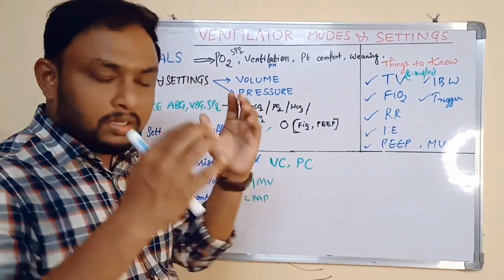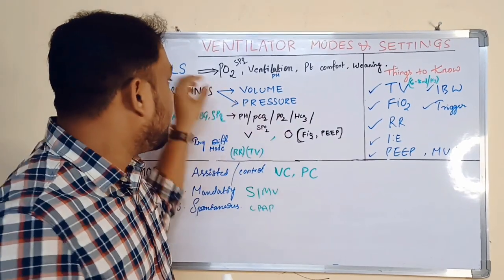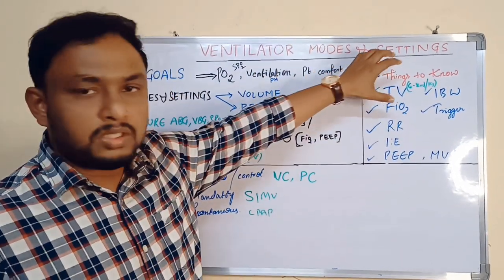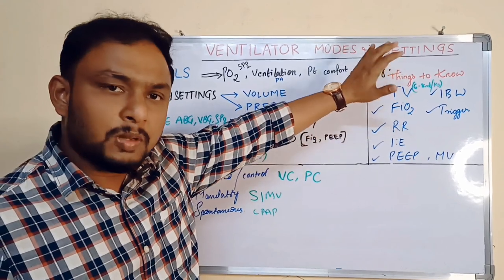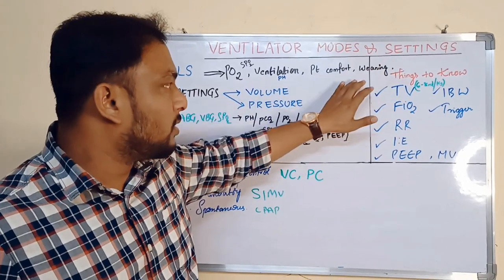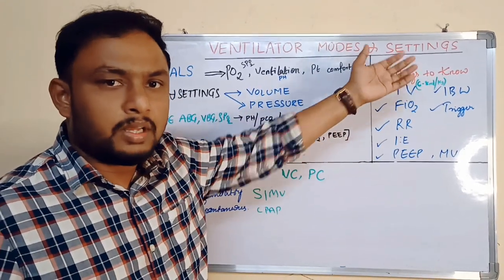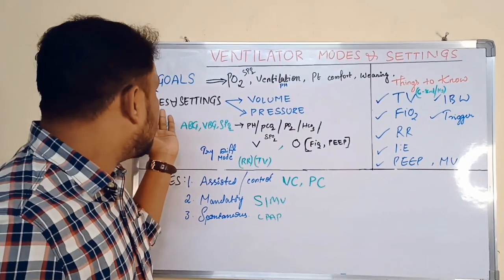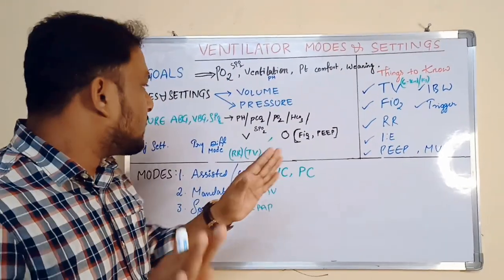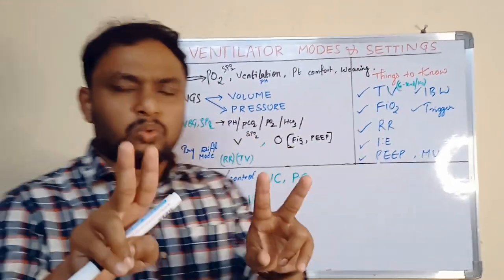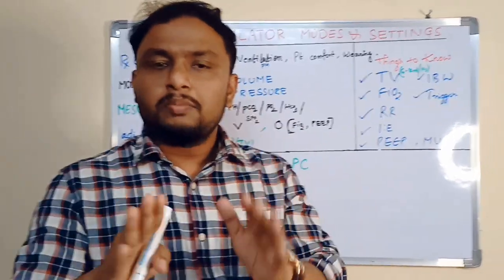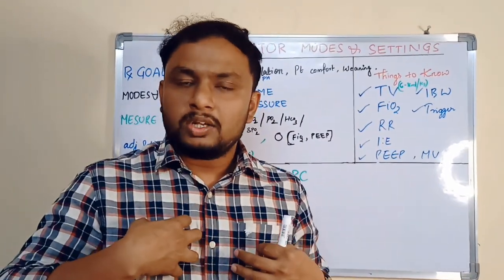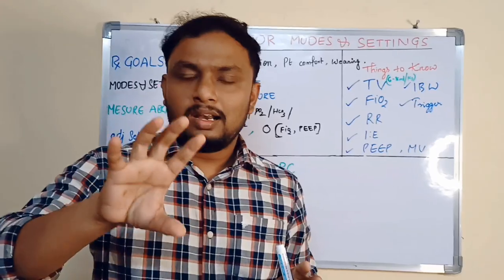You need to keep in mind these are the treatment goals. You need to achieve these goals. At the end, if the patient is performing well, you need to drive towards weaning off — to extubate. And in this, what are the main modes and settings? Mainly two types will be there: volume and pressure. You need to maintain the lung volume and lung pressures.